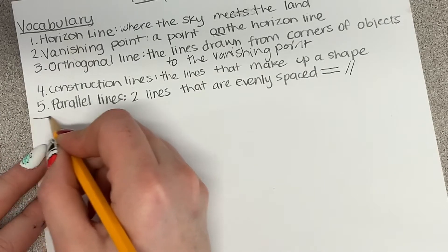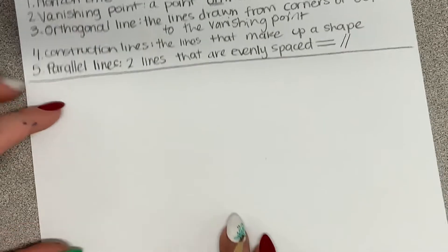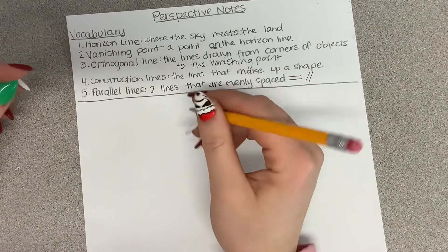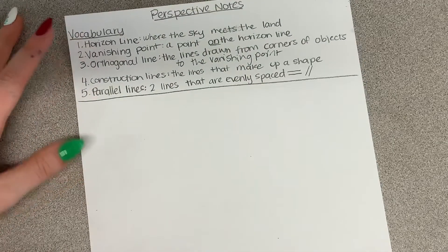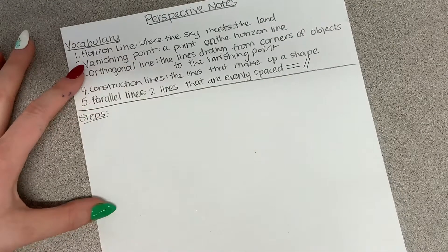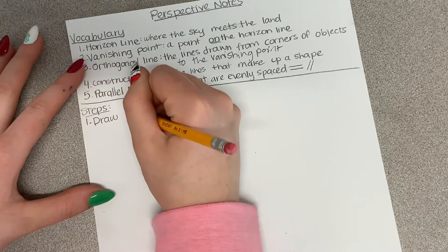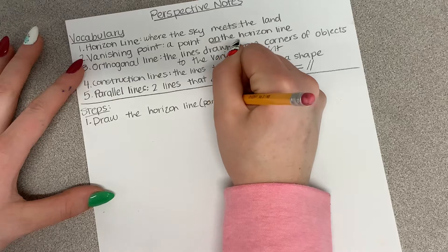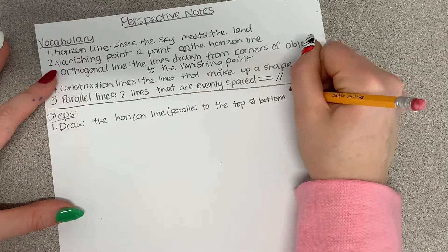Now we're going to move on to drawing our little example and writing steps down — kind of doing both at the same time. You still need to write kind of small so you have room for the drawing at the bottom. You can make this video full screen by clicking on the title to go directly to YouTube. So write 'Steps' and we're going to start with step one: draw the horizon line, parallel to the top and bottom of paper.